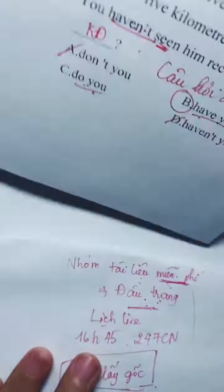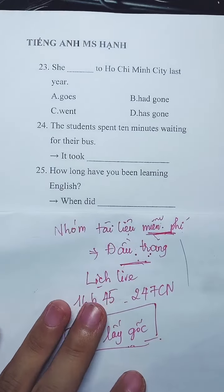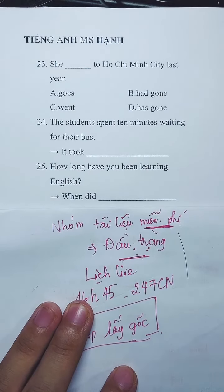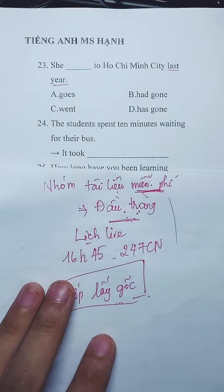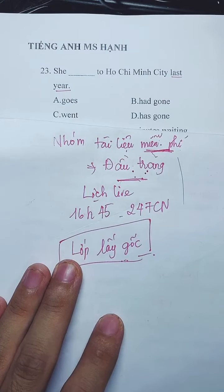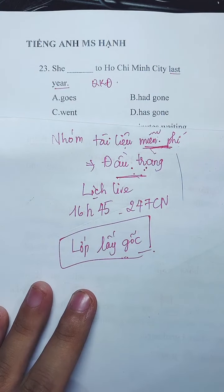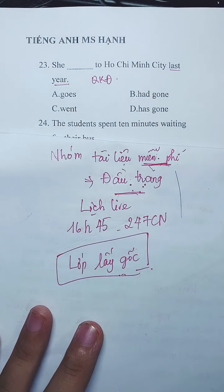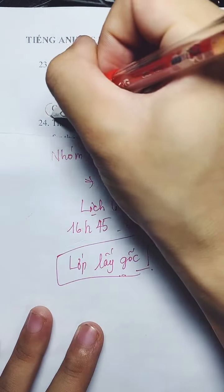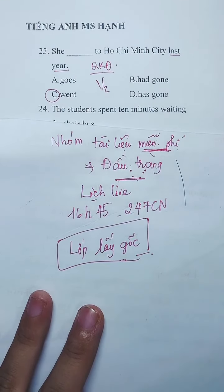Câu 23 là câu chia thì của động từ, có 'last year'. Năm ngoái cô ta tới thành phố Hồ Chí Minh - chia động từ ở thì quá khứ đơn. Đáp án C, V2 là 'went'.